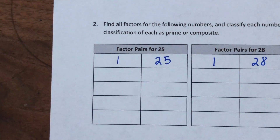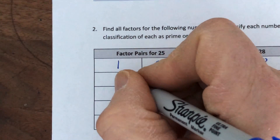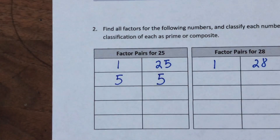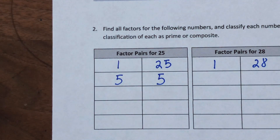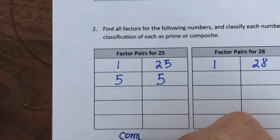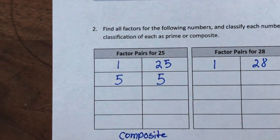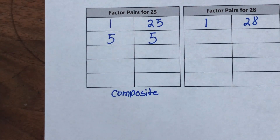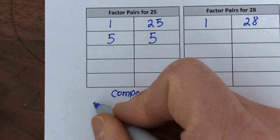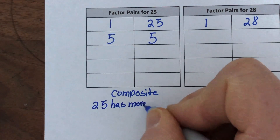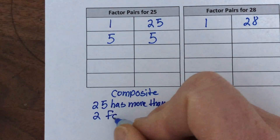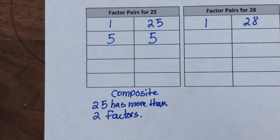For 25 — what other numbers can I multiply to get 25? Five times five. Are there any others? No, because 25 is odd so two won't work, and three skips over at 21, 24, 27. So the factors are one, five, and twenty-five. It's a composite number because 25 has more than two factors. Remember: factors are the numbers you multiply together to get a product.